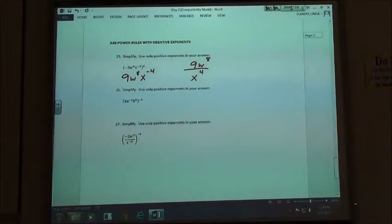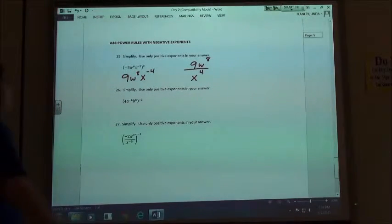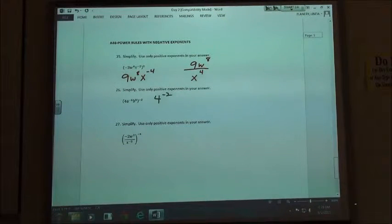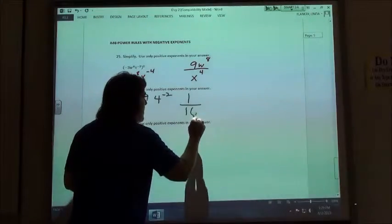Raise it to the negative 2. So if I do 4 to the negative 2 power, what is 4 to the negative 2 power? 1 over 4 squared. 1 over 4 squared, which is 1 16th, right? So 1 16th.